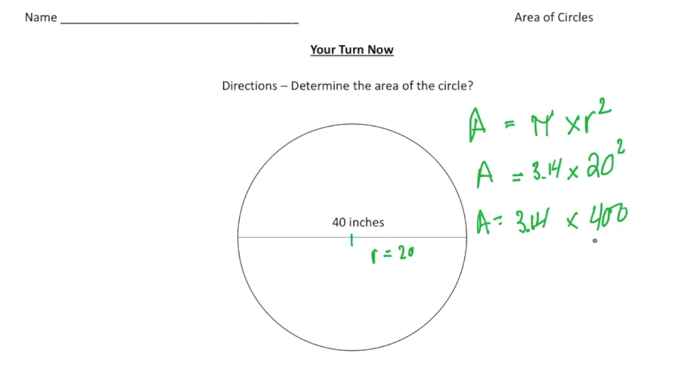That's 0.14. And then finally, 400 times pi will give us an answer of 1,256. And that's going to equal the area. But again, the label matters here. So because we're talking about inches, it's going to be square inches. So inches, squared, and there it is.